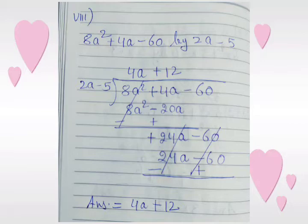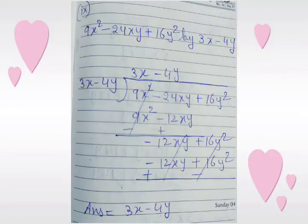We copy down the third term minus 60. We multiply 2a minus 5 with plus 12, then we get 24a minus 60, and after changing the sign we can cancel the terms. The answer is 4a plus 12.